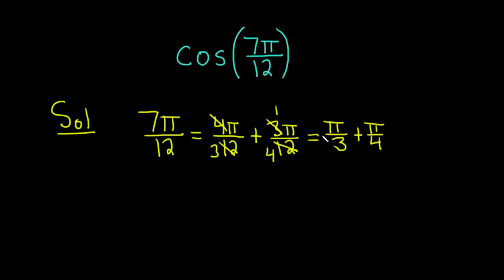So we can find the trig function values of π over 3 and π over 4. So now we can use an identity. Recall that if you have the cosine of a plus b,